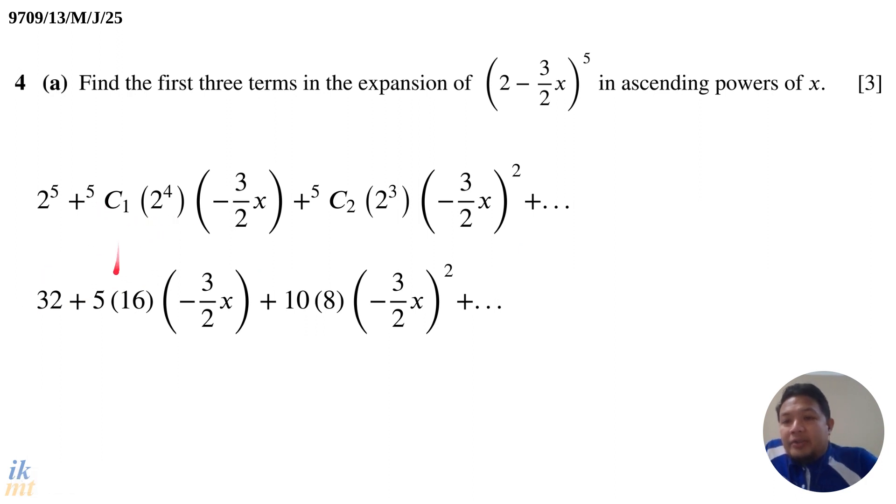So then we evaluate the 5C1, right, so 5C1 here equals 5, and 2 power 4 here equals 16, 5C2 here equals 10, and 2 power 3 here is equal to 8. And then just continue to multiply, and doing it carefully, be careful here, one of the most common mistakes that could happen is when you square 3 over 2x squared, sometimes some people would forget to divide by 4. That's one of the most common mistakes that can happen, so just do them carefully.